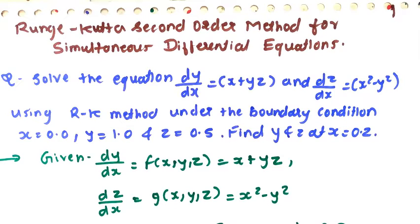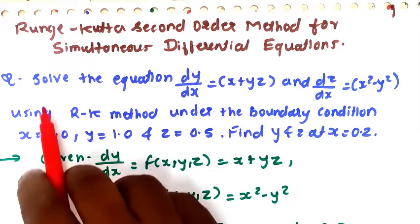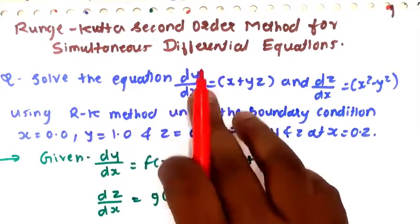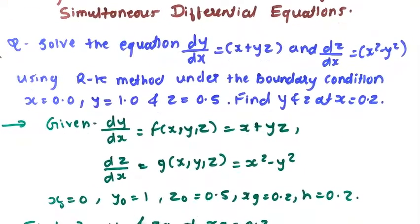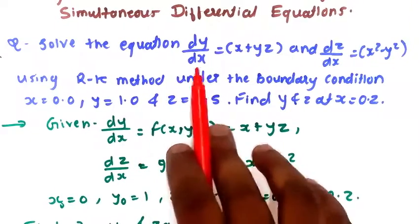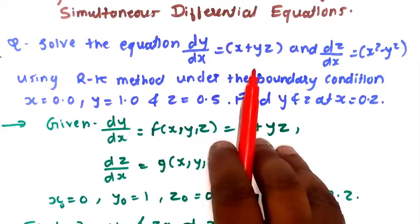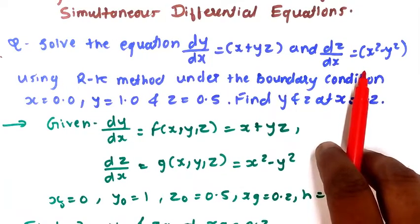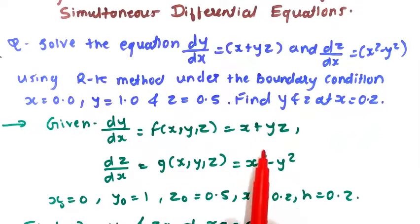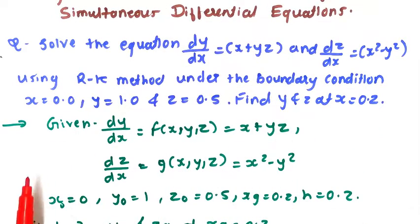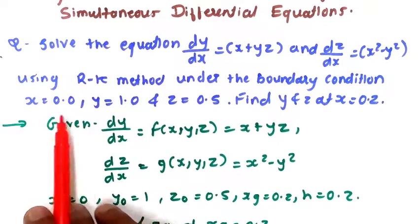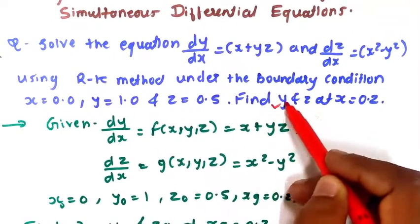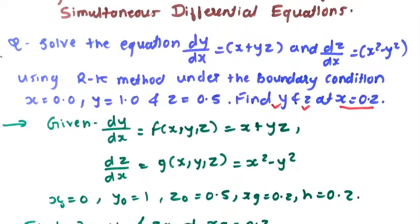Hello everyone. In this video we are going to see a numerical for the Runge-Kutta second order method, that is the RK method for simultaneous differential equations. The numerical is to solve two equations: dy/dx = x + yz and dz/dx = x² - y², using the RK method with boundary conditions x=0, y=1, z=0.5. We have to find the value of y and z at x = 0.2.